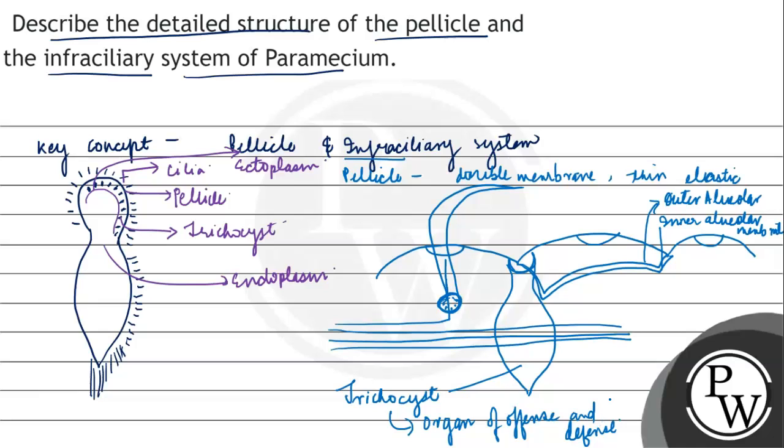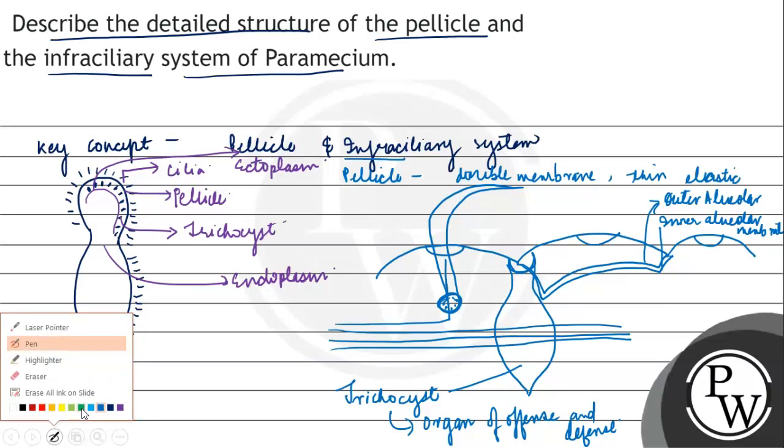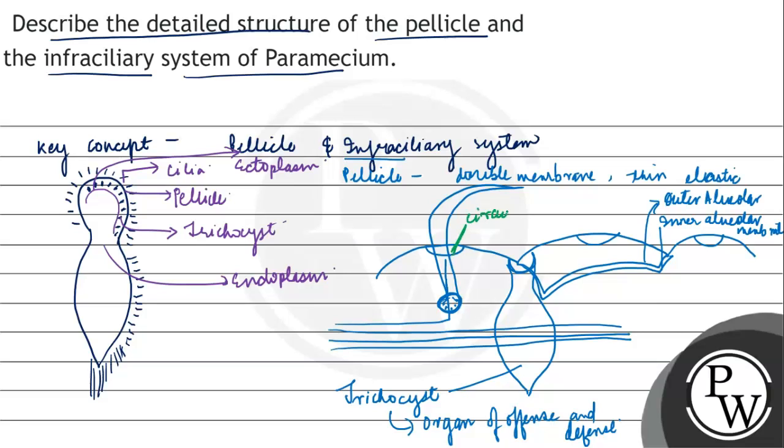Apart from that inki kuch specifications hai, we'll be studying about it. Now jahan se hi cilia originate kar raha hai, right, this is space left between - isko hum kehte hain circumciliary space. Uske alawa jo neeche jahan se originate ho raha hai, this is kinetozome, right? Kinetozome having nine plus two arrangement jo ki flagella ya cilia mein paya jaata hai, right?